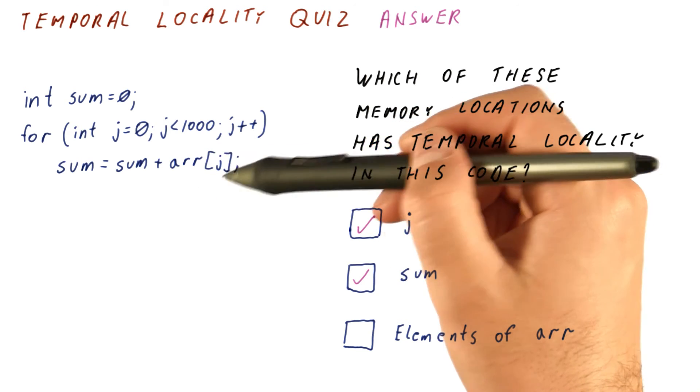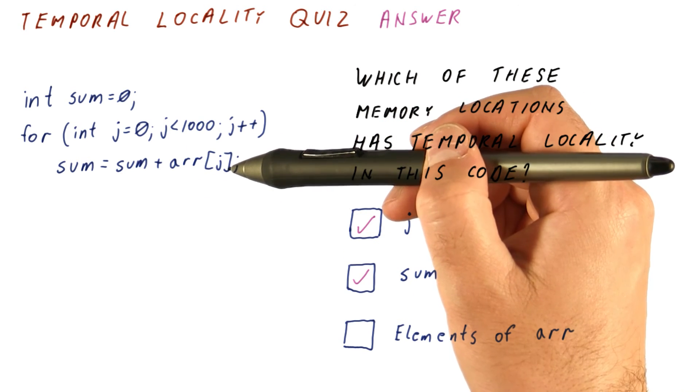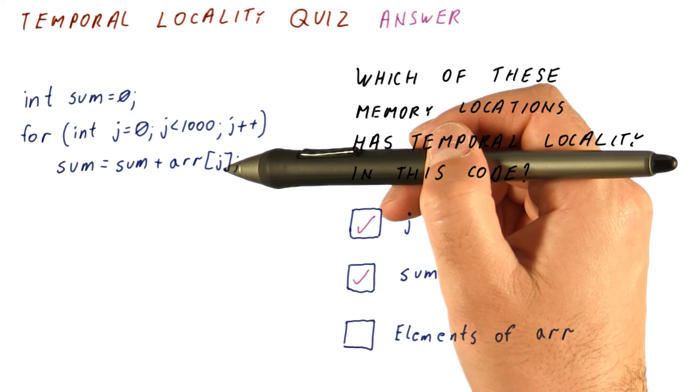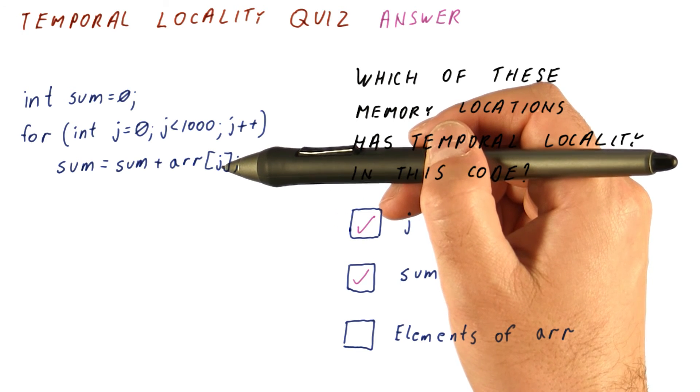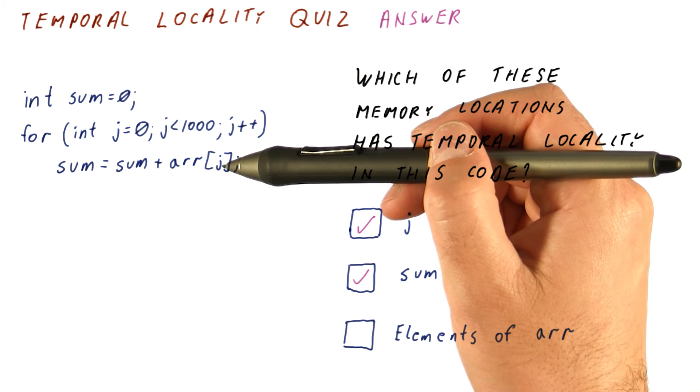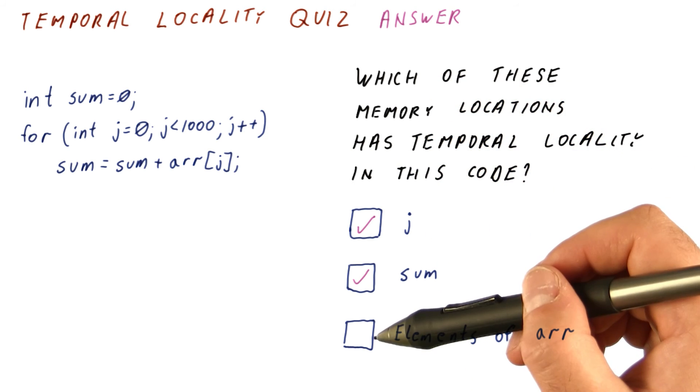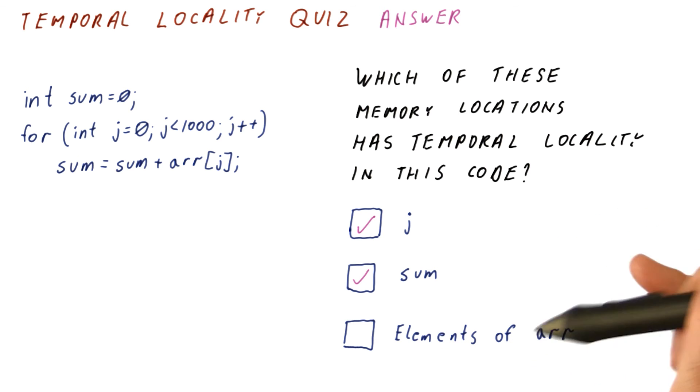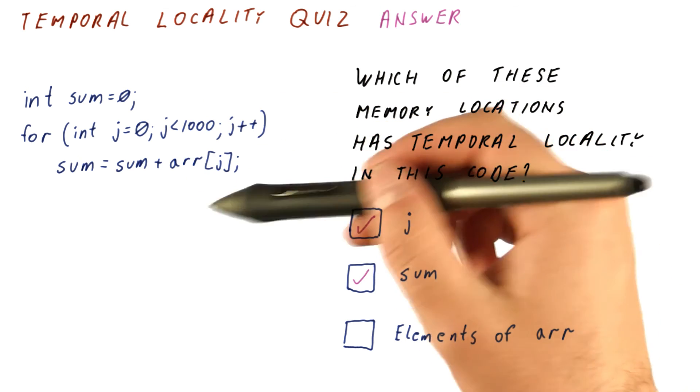We will access arr[1], arr[2], etc. But for each element, it's accessed only once. So if we conclude that when it's accessed it's going to be accessed again soon, we would not be correct. So this choice should not be selected. This variable does not have temporal locality in this code.